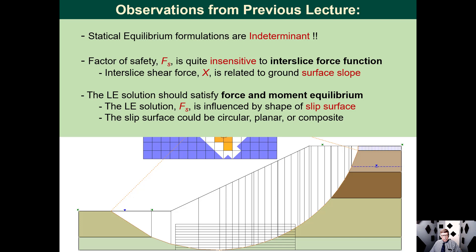We also found that the limit equilibrium solution could satisfy either force or moment equilibrium, or both. The solution that satisfies both force and moment equilibrium was dependent on the shape of the slip surface — whether it was circular, planar, or composite. We came to the conclusion that it is important to solve for the factor of safety that satisfies both moment and force equilibrium.